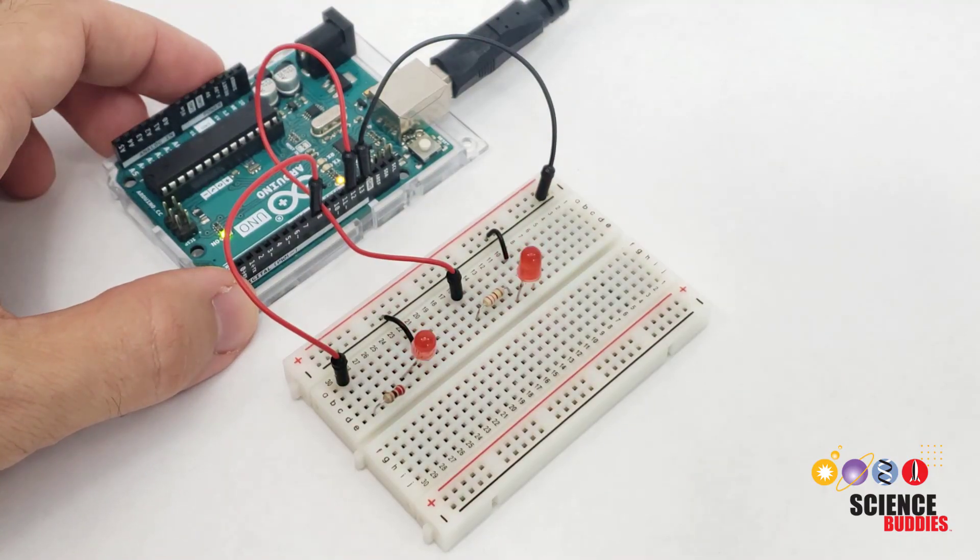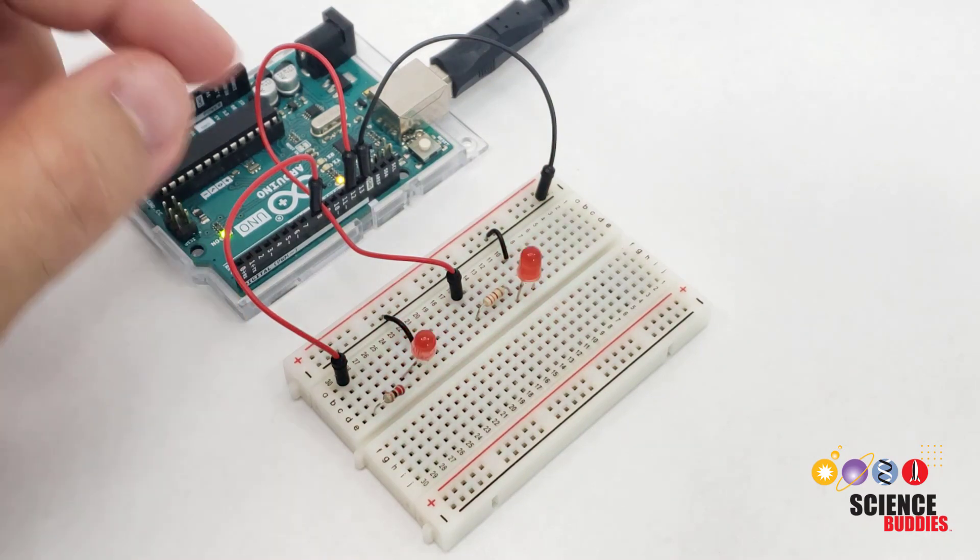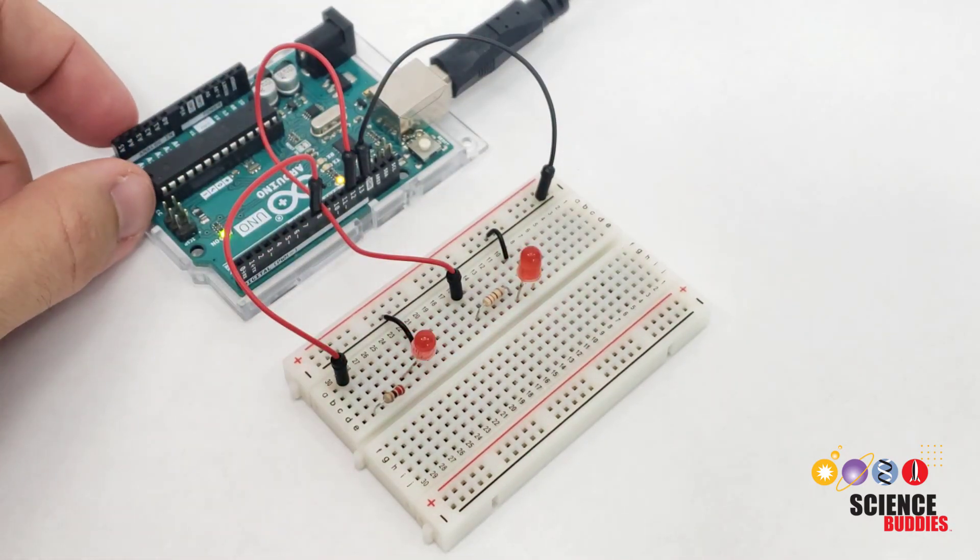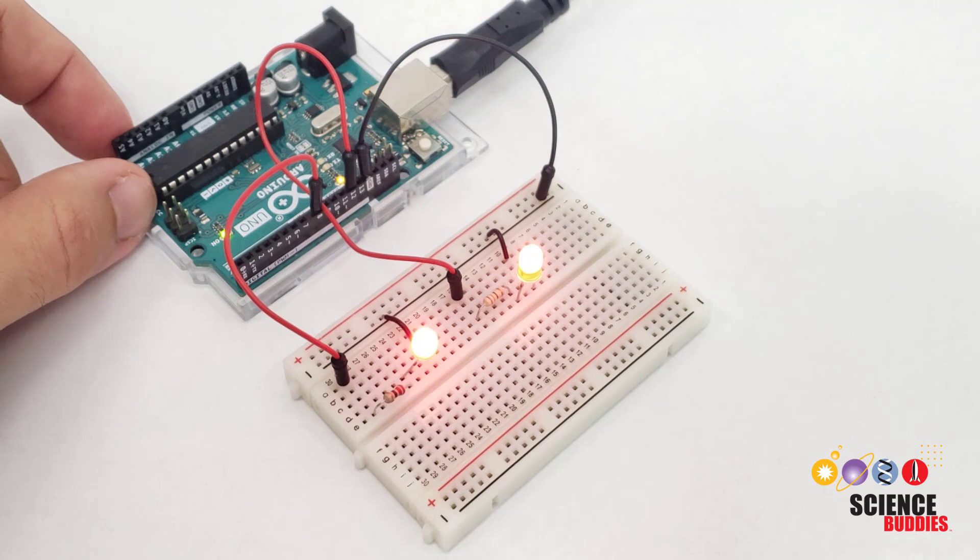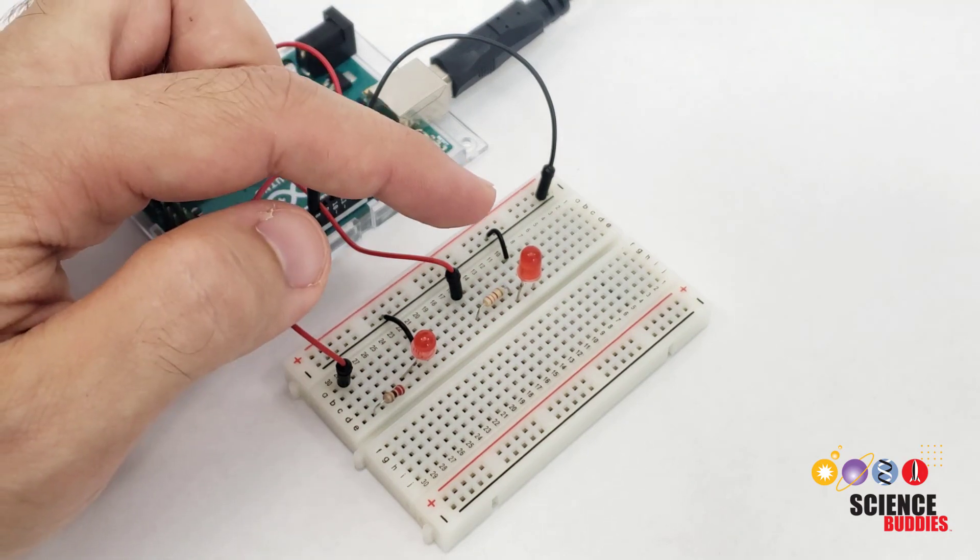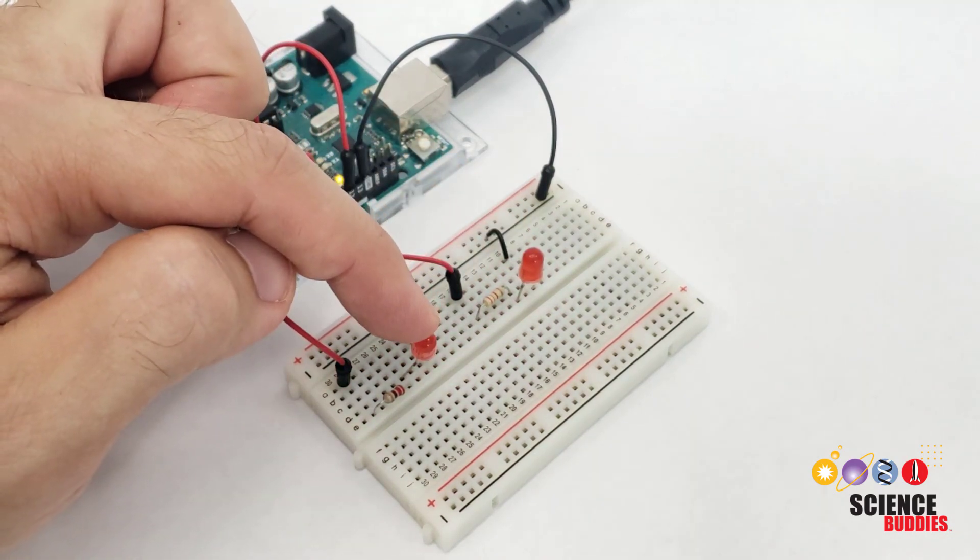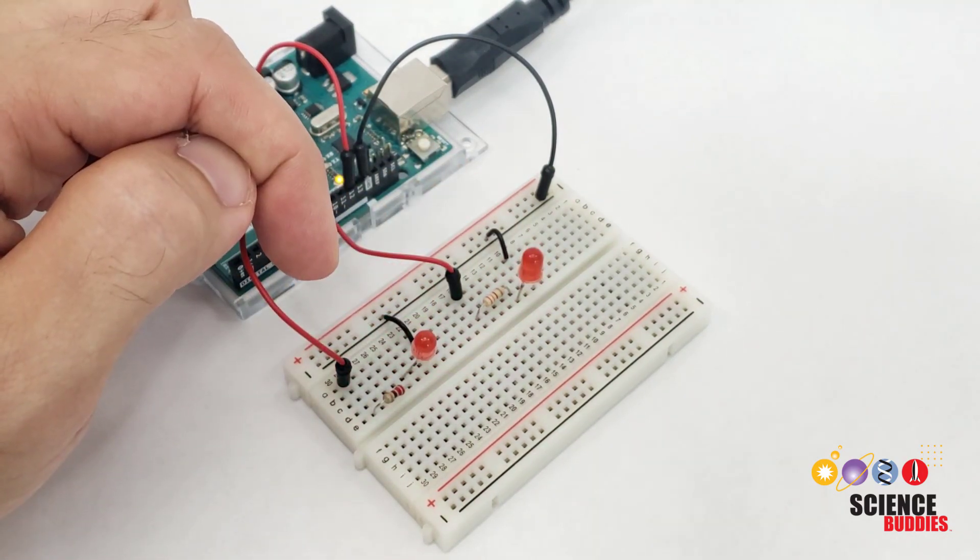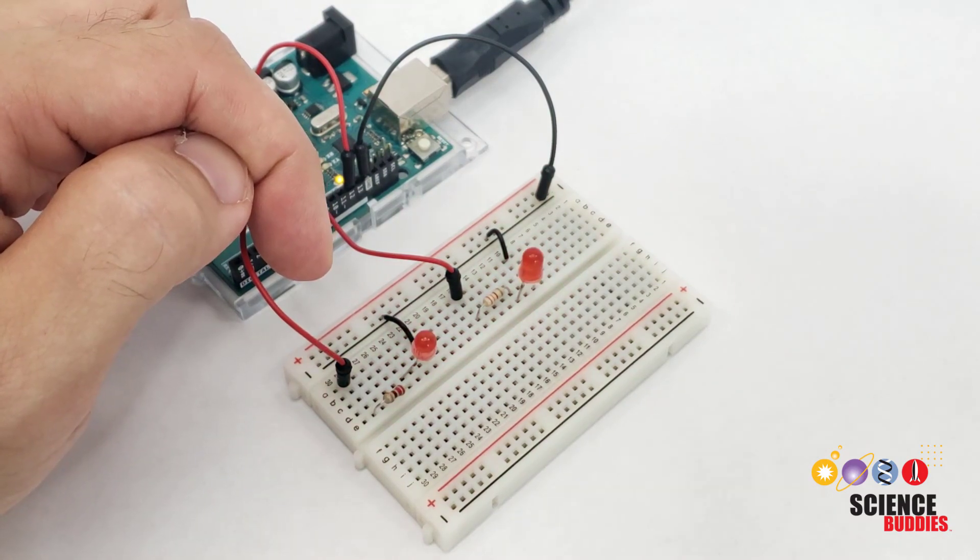Now when I reconnect my Arduino and upload the new code, I see both LEDs blink on and off at the same time. Here's one more challenge if you're up for it. Change your code so the LEDs blink such that one is on while the other is off and vice versa. Pause the video here and give it a try.